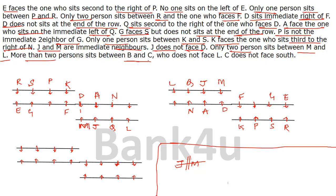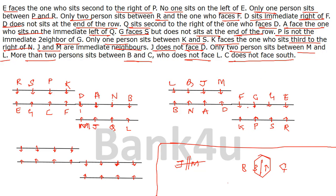More than two persons sit between B and C. C does not face L. Since C cannot be in the position facing L, B is placed in one spot and C in another such that the gap exceeds two. Confirming C does not face L validates this arrangement. This completes the final seating arrangement.